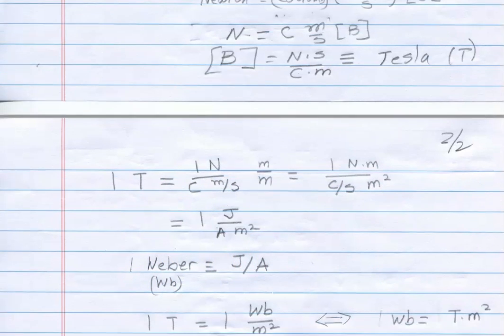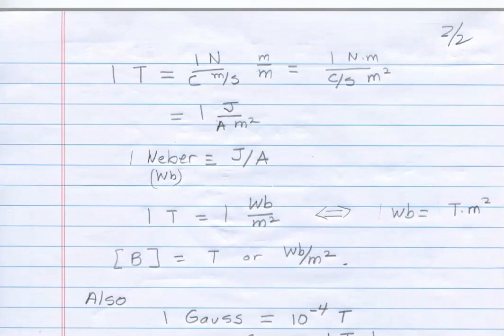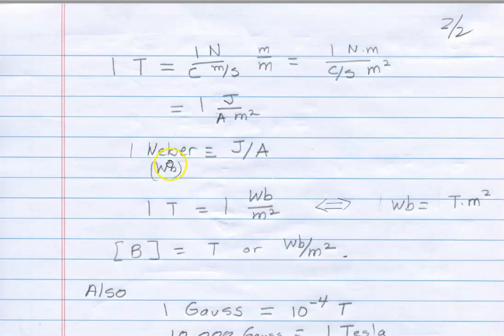And then people will define a unit called the Weber as the joule per ampere. And so one Tesla then, joule per ampere is just a Weber per meter squared. And if you multiply both sides by meter squared, you get a Weber as a Tesla times a meter squared. What it entails is that Weber is a unit for magnetic flux, which we'll come into a little later.